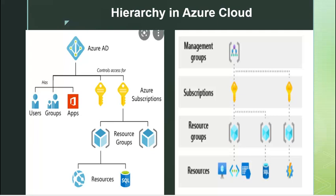A resource group is just a container to define structure in Azure cloud so that we can define policies and controls in a better way. That covers the case where we have just one subscription. Now let's take an example where we have more than one subscription. Managing multiple subscriptions can be complex, and to overcome this problem we have the management group — a virtual entity we can create in Azure cloud. A management group is a container where we can put a set of subscriptions under one management group.